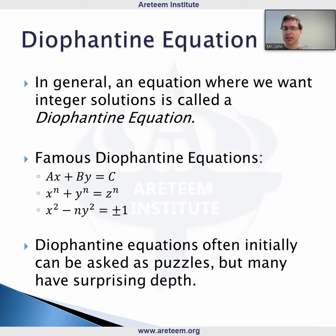Very famous ones include linear equations Ax plus By equals C. You might recognize if n is 2 in the second one, this is the Pythagorean theorem. There's a lot of stuff with Pythagorean triples: 3, 4, 5 triangles, 5, 12, 13 triangles. If you're interested in number theory, you can look for patterns where they're integers.